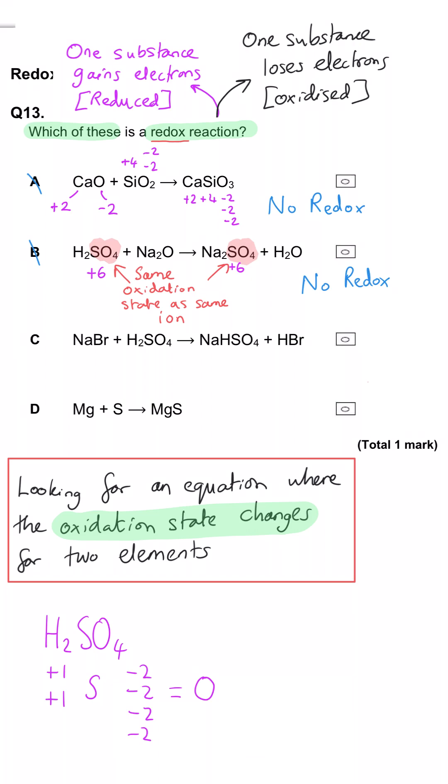In C, sodium is plus 1 and Br is minus 1. Sulfur is plus 6 and those are all the same in the products as well.